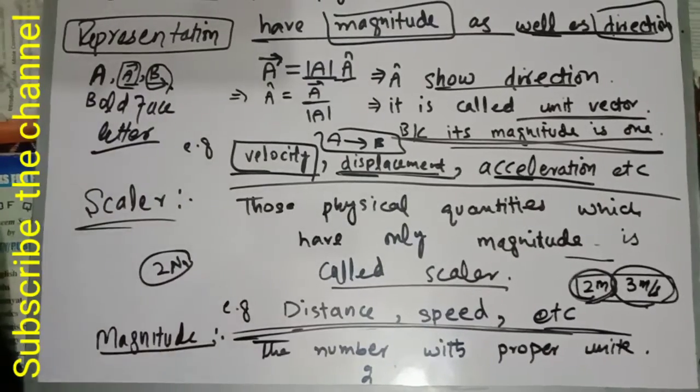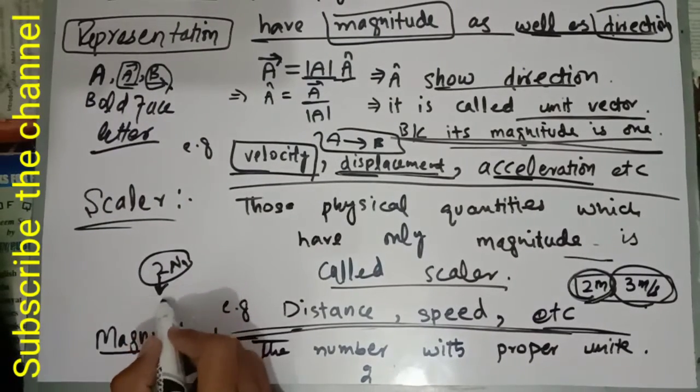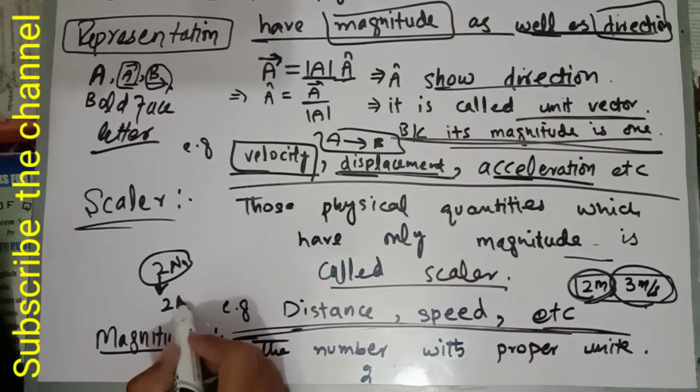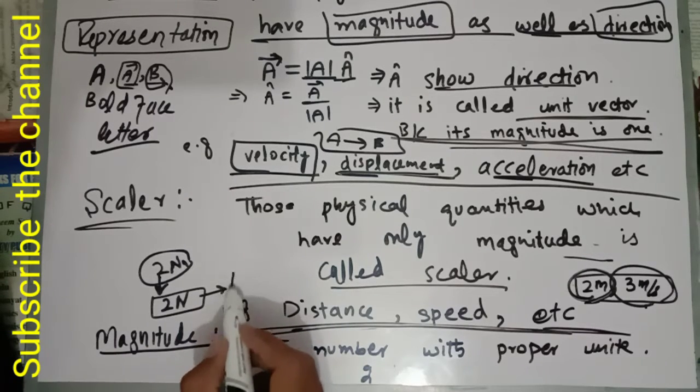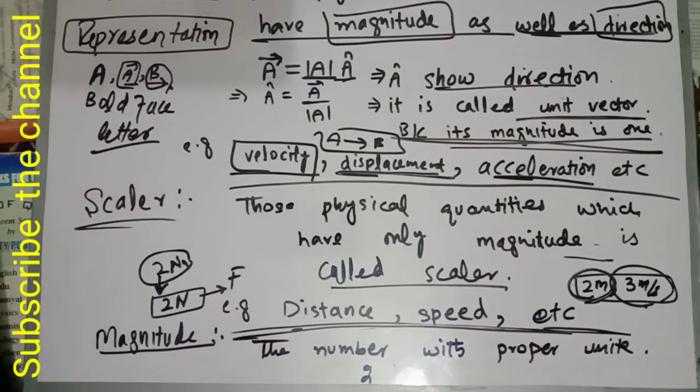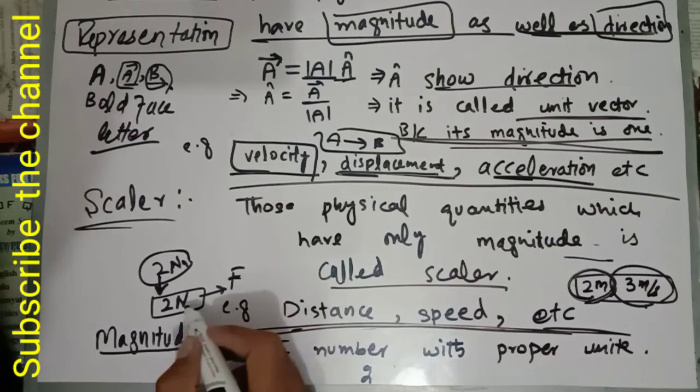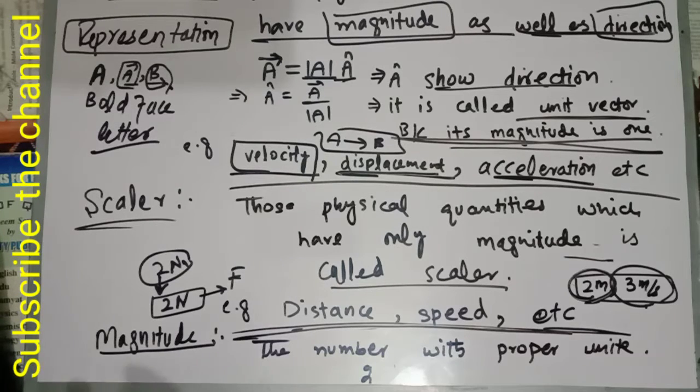When we represent a number, this is a scalar number with proper unit like Newton. This means we are going to discuss force. Force has the unit Newton. Two Newton force is the unit. The unit Newton must be proper with the number.